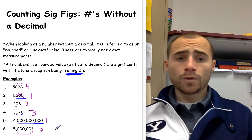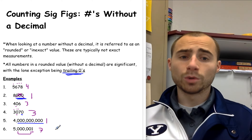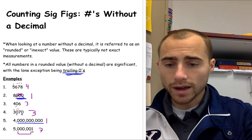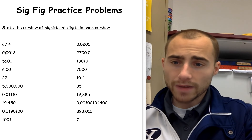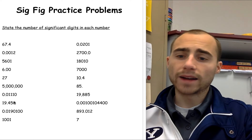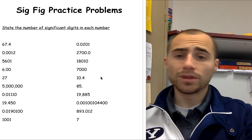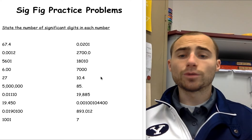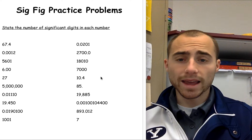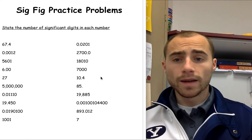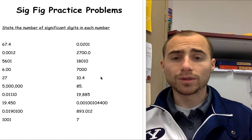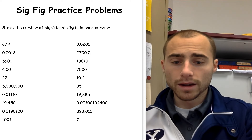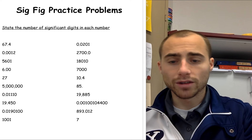Those are our rules for numbers without a decimal — we just don't count the trailing zeros. Now you have a series of 20 practice problems. Pause the video and go through each of these 20 practice problems. After you've finished, come back and check your work, then correct any mistakes once you see why you made them.